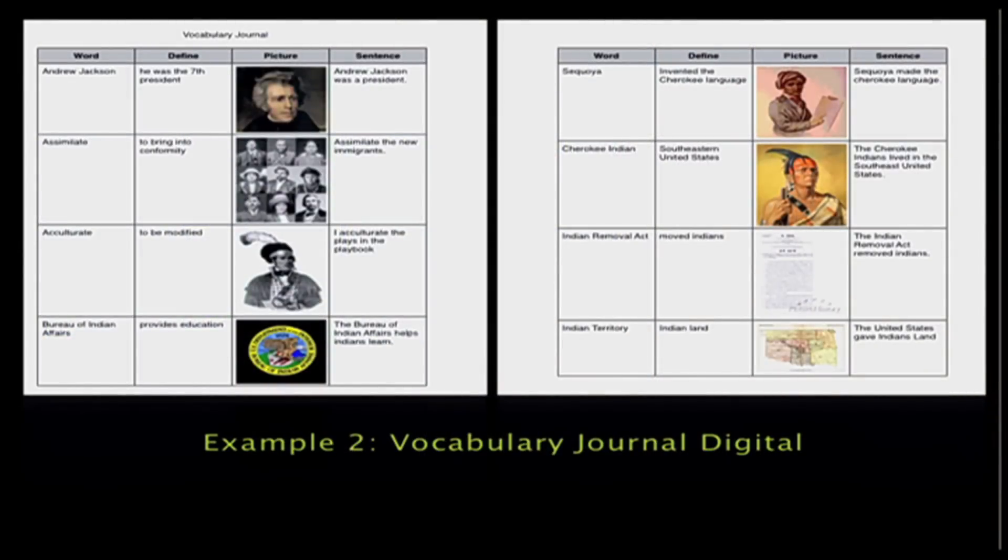This is the exact same lesson, but it's done with some augmented pieces to it. What the students have done in this case, we took the exact same lesson, but instead of drawing the picture in, we used some pictures, or the student used some pictures that they found online. Instead of drawing a picture of Andrew Jackson up there at the top, they found a picture of Andrew Jackson online and put it into that little cell in that form. In Assimilate, instead of drawing the picture, they actually found a picture of some Indians back in the 1800s that were wearing suits that actually demonstrated assimilation.